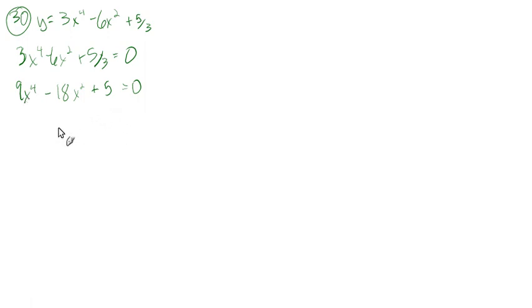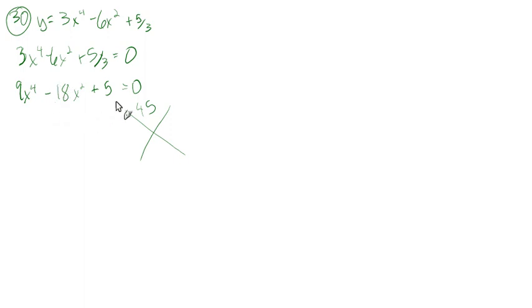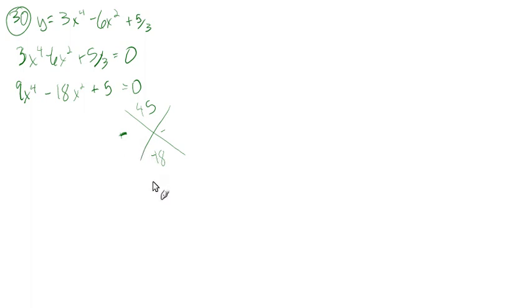Setting 3x⁴ - 6x² + 5/3 = 0, multiplying through by 3 gives 9x⁴ - 18x² + 5 = 0. This is in quadratic form; we can factor it. Using the AC method: 9×5 = 45, and we need two numbers that multiply to 45 and add to -18: that's -15 and -3.